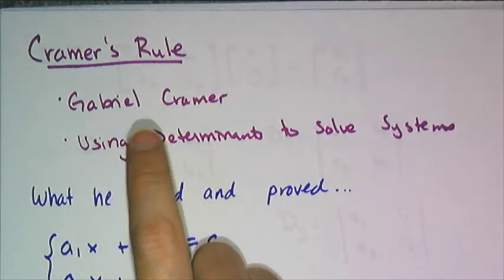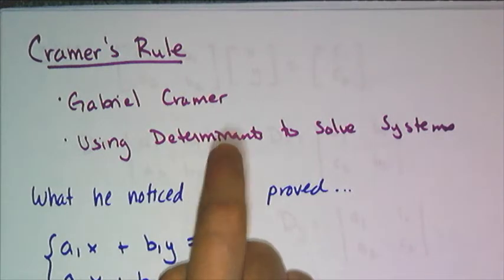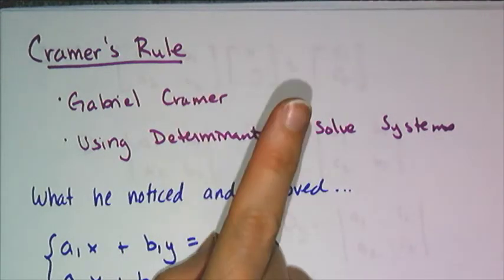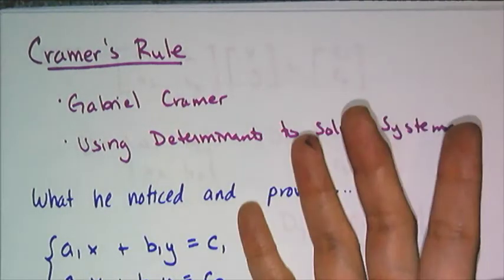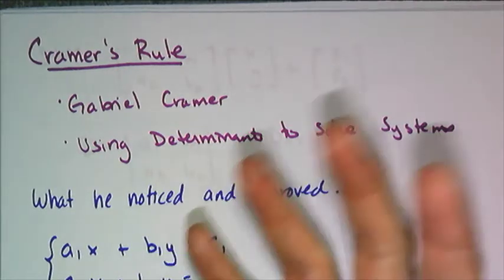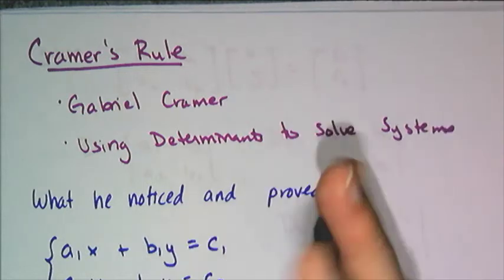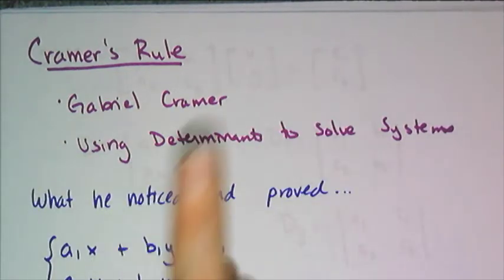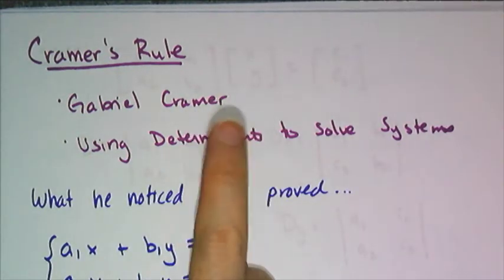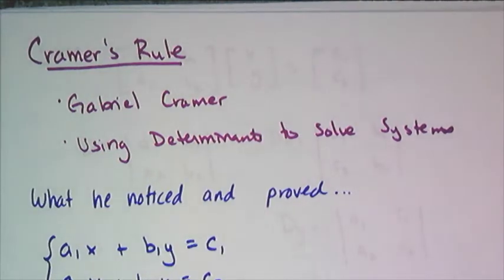He determined that you can actually use the determinants themselves to actually solve the system, so no need to invert, no need to use row operations, no need to set up a system of equations, none of that, just use the determinant to find the solution to a system of equations.